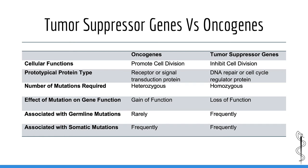Now let's compare tumor suppressor genes and oncogenes. Both are involved in carcinogenesis, but the mechanisms differ. Under normal circumstances, oncogenes promote cell division whereas tumor suppressors prevent cell division. Oncogenes typically code for receptors or signal transduction proteins, while tumor suppressor genes code for proteins involved in DNA repair and regulation of the cell cycle. A tumor suppressor gene only needs a single functional copy to exhibit its effect — one copy is as good as two copies — therefore you need to knock out both copies to promote carcinogenesis, meaning you need homozygous mutations.